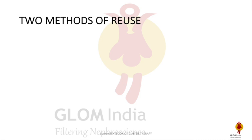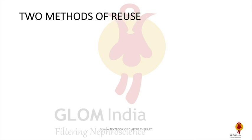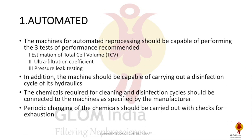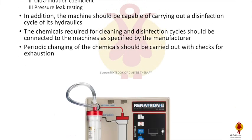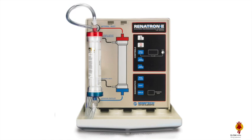There are two methods of reuse: automated and manual. For the automated method, machines are available that check performance using three tests: estimation of total cell volume, ultrafiltration coefficient, and pressure leak testing. The machine should be capable of carrying out a disinfection cycle of its hydraulics, and the chemical required for cleaning and disinfection should be connected as specified by the manufacturer, with periodic checking for exhaustion.